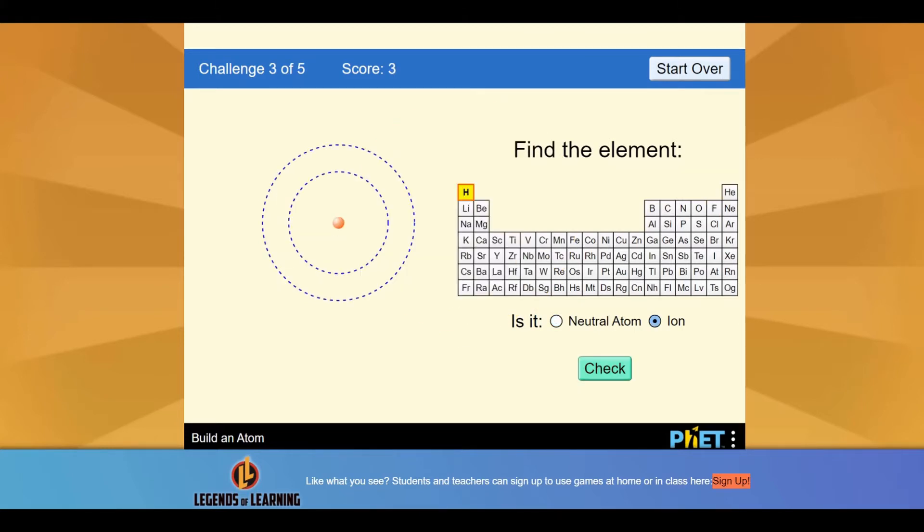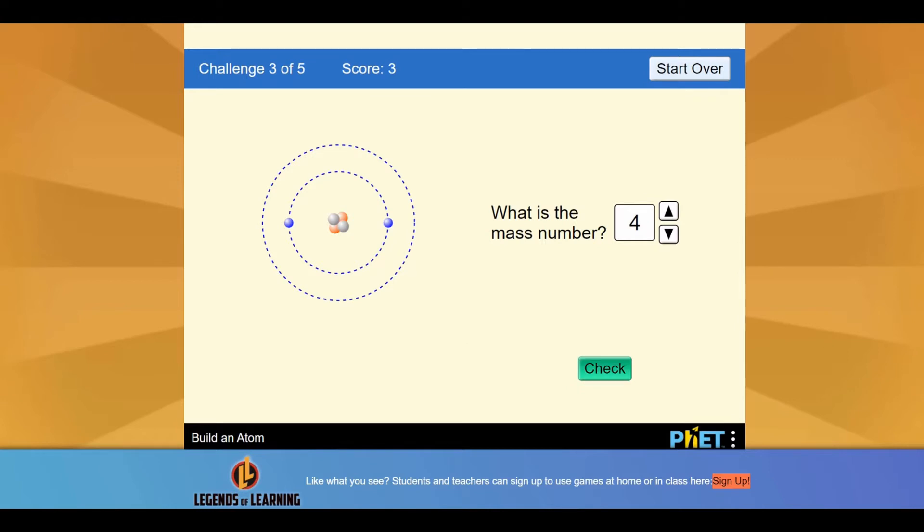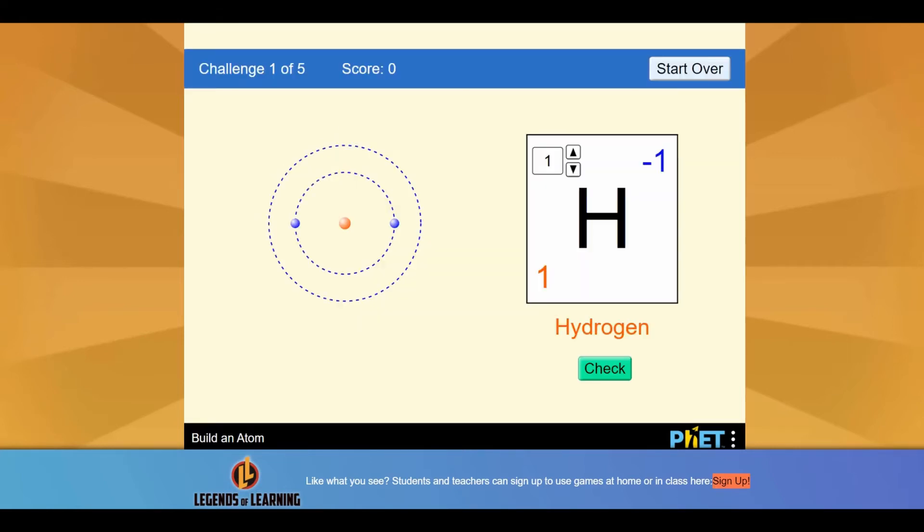Learn about the properties of an element in four different ways. In minigame 1, you will learn how to find an element on the periodic table. In minigame 2, you will learn how to determine which element it is by looking at its number of atoms.